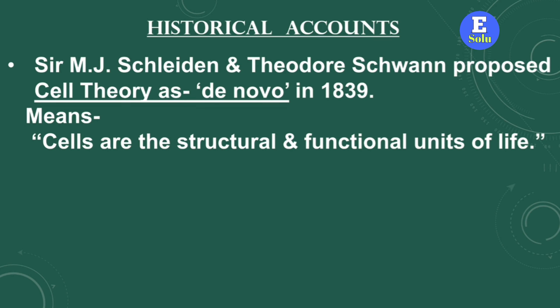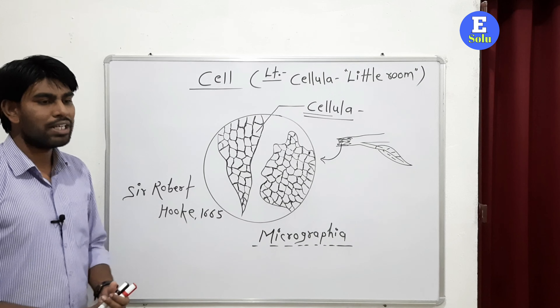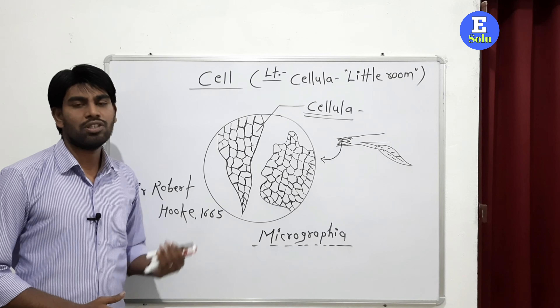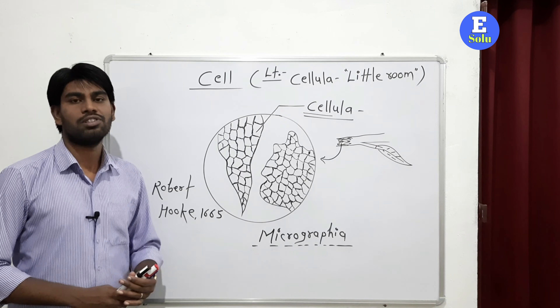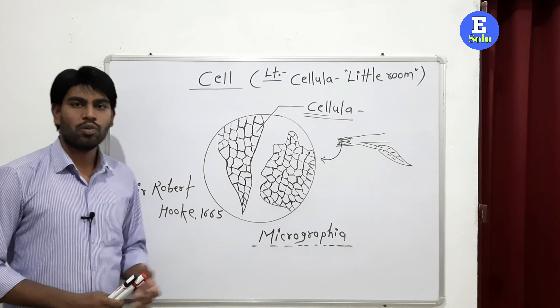After that, in 1831, Sir Robert Brown discovered the nucleus. Later on, in 1839, two scientists — Sir Matthias Jacob Schleiden and Theodore Schwann — proposed the cell theory, which states that the cell is the structural and functional unit of life. Later on, Sir Rudolf Virchow in 1855 modified this cell theory with 'omnis cellula e cellula,' which means that new cells form from pre-existing cells. Two scientists, Knoll and Ruska, developed the electron microscope, after which cell organelles and the smallest structures inside the cell were discovered.